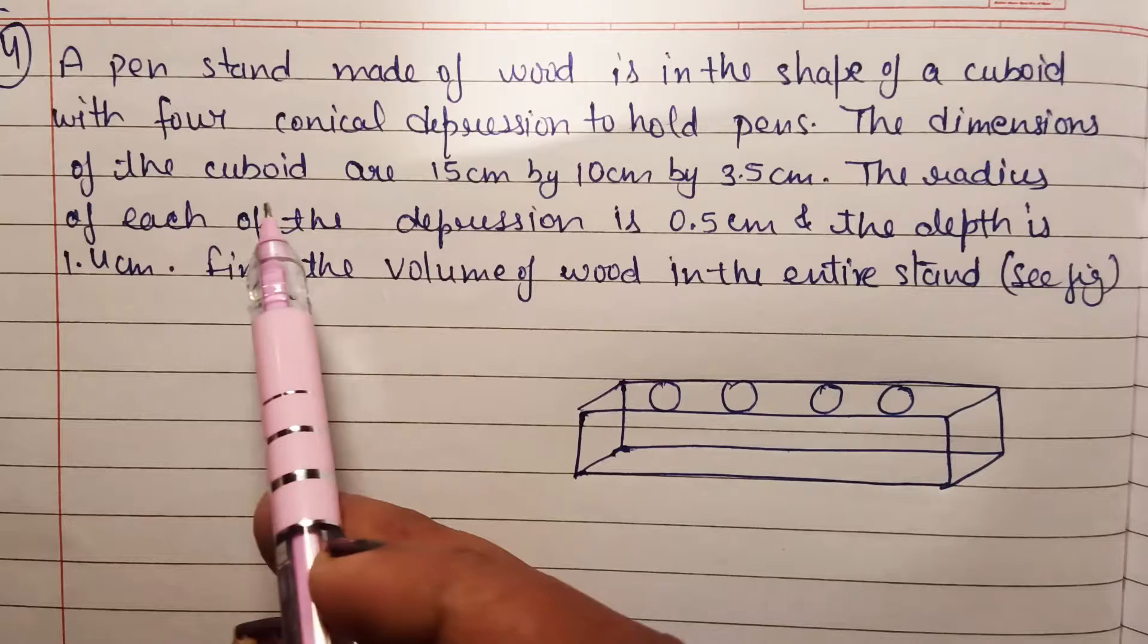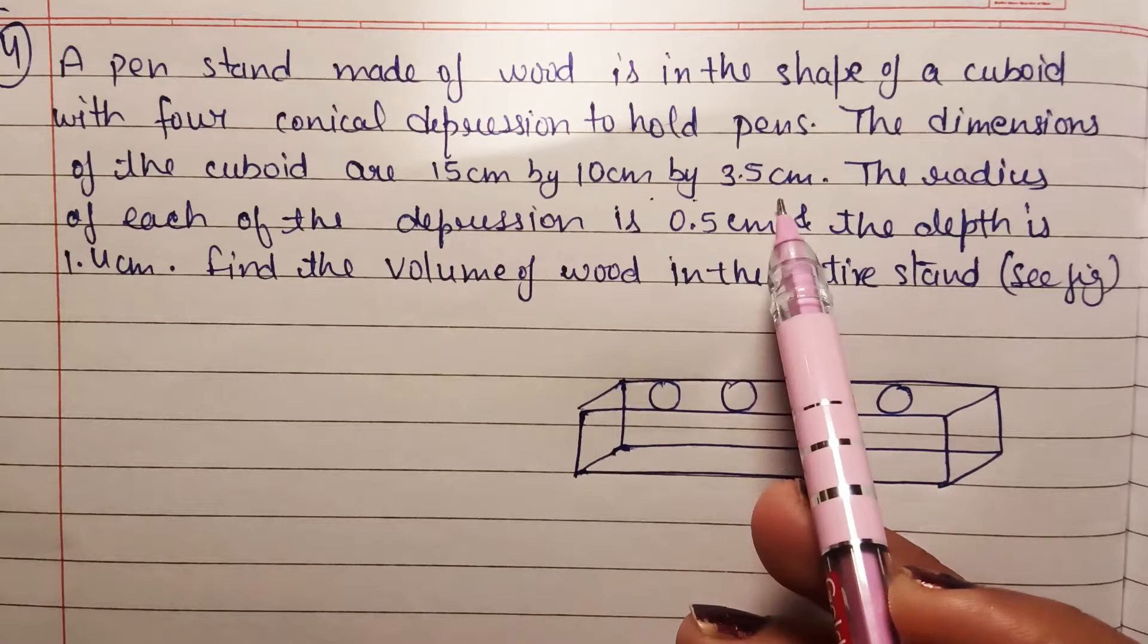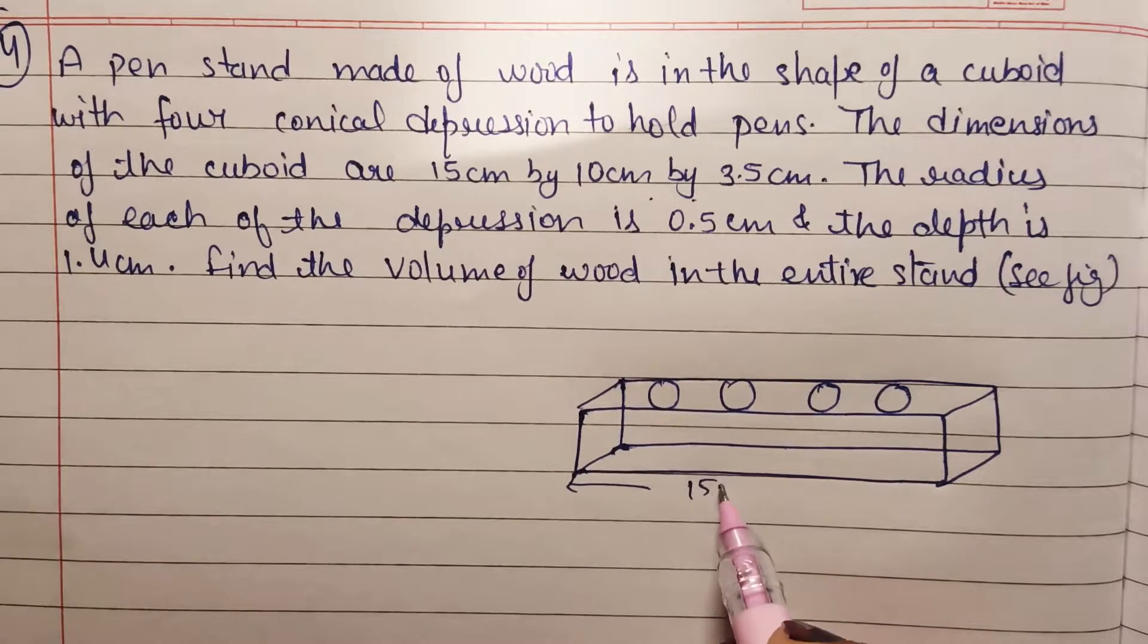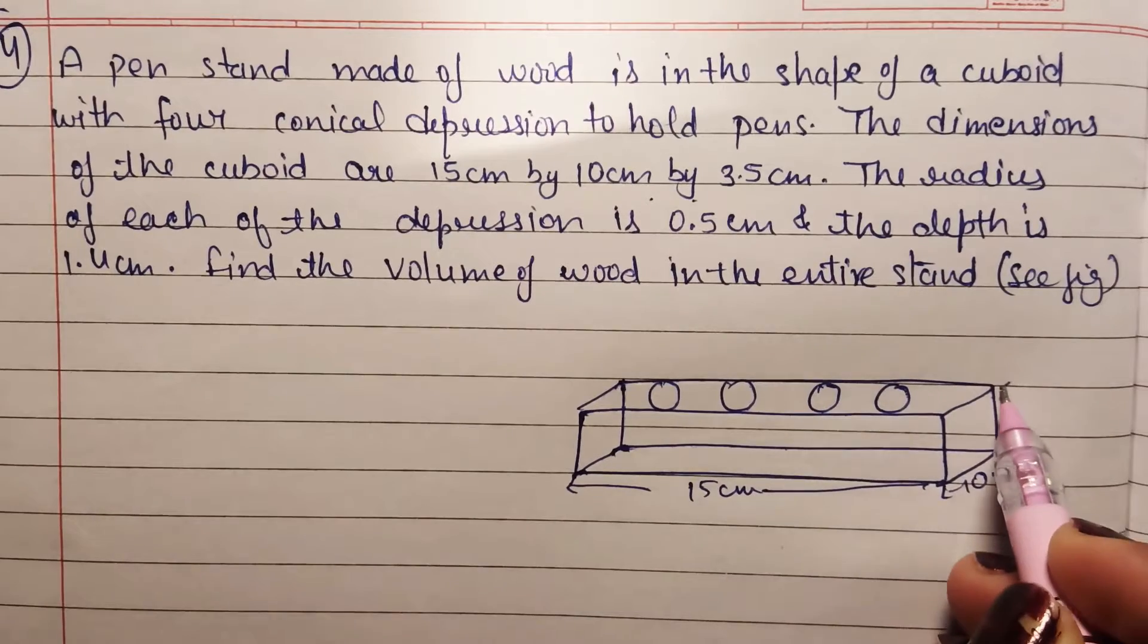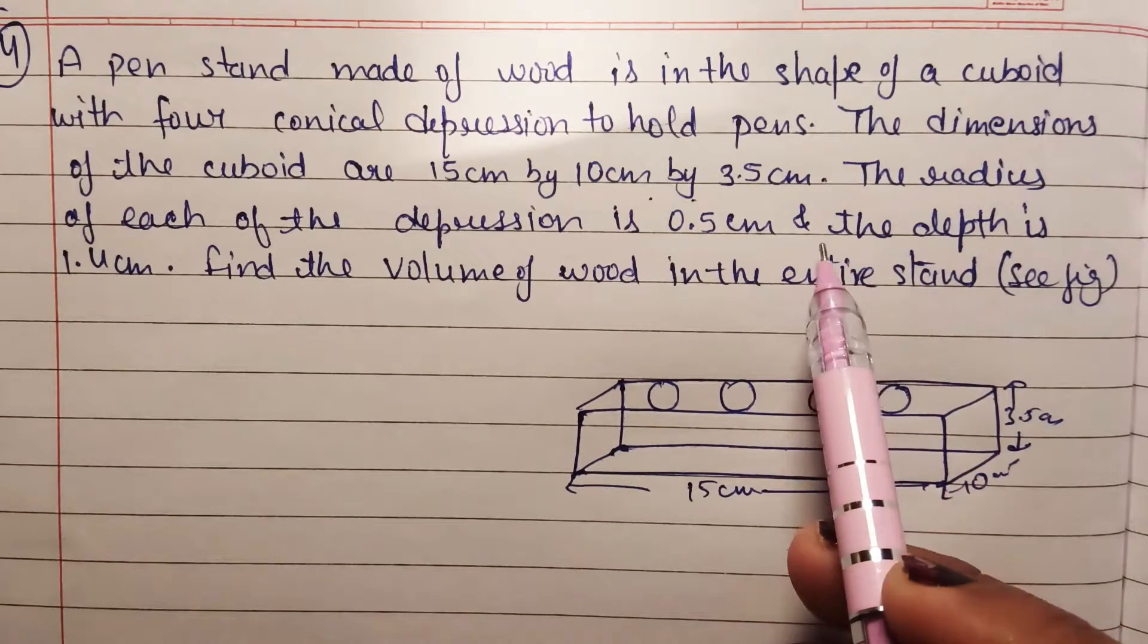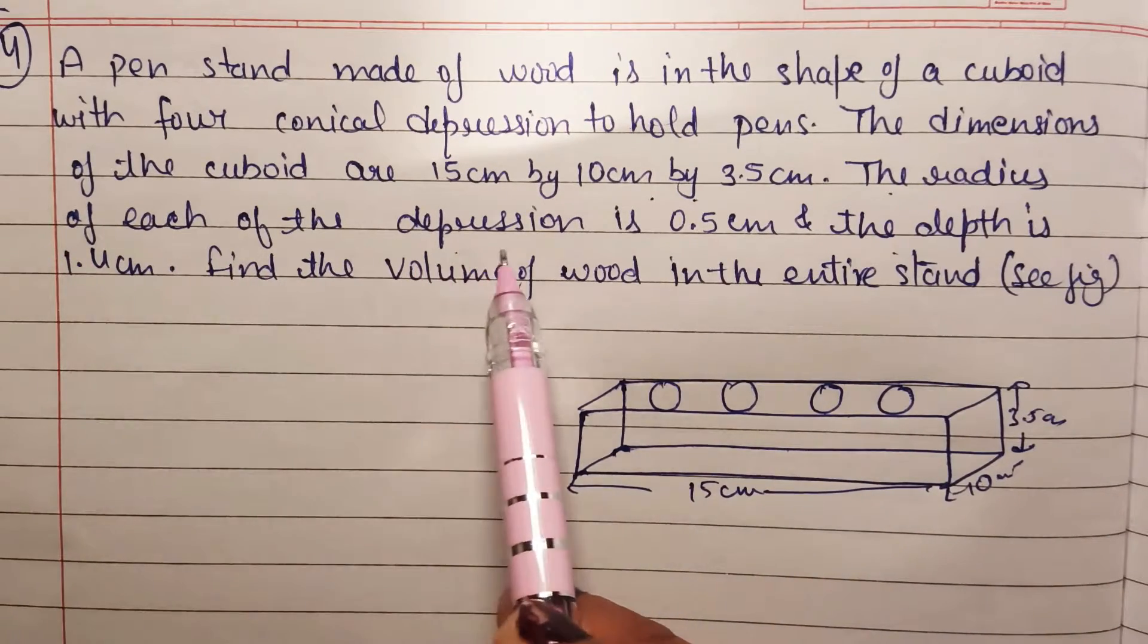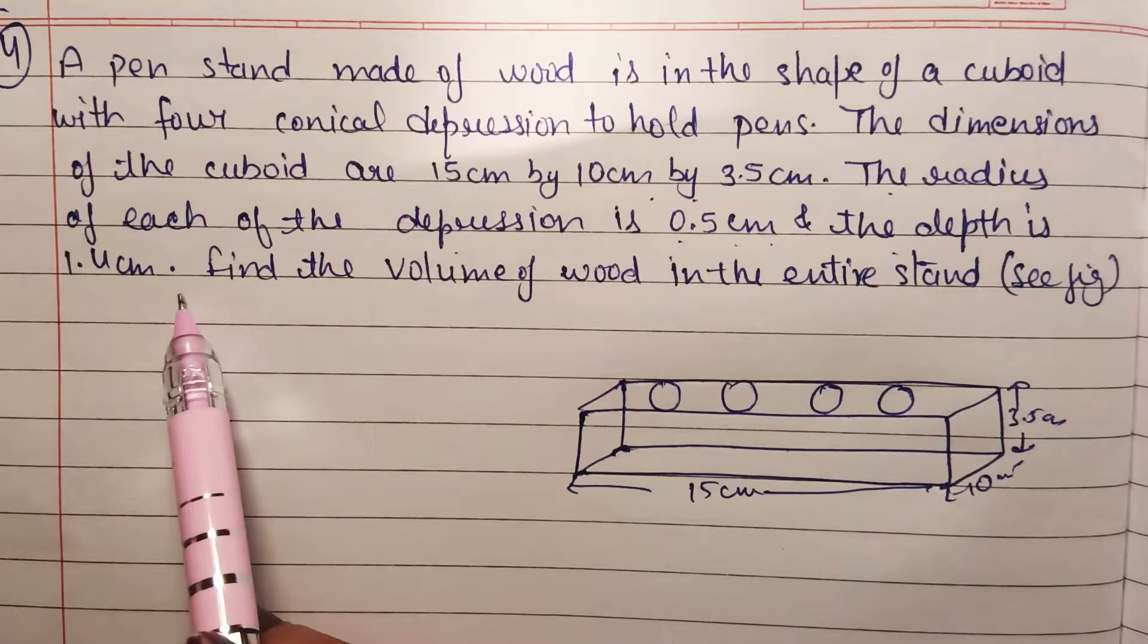The dimensions of the cuboid are 15 cm by 10 cm by 3.5 cm. This cuboid dimensions are also given: 15 cm, 10 cm, and 3.5 cm. And the radius of each of the depression is 0.5 cm and the depth is 1.4 cm.